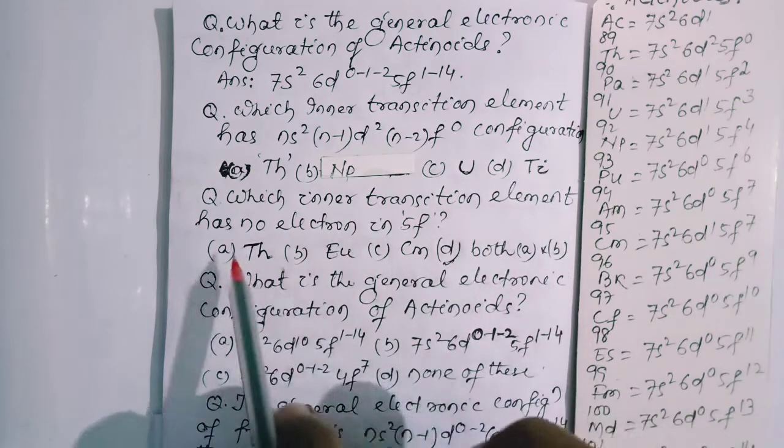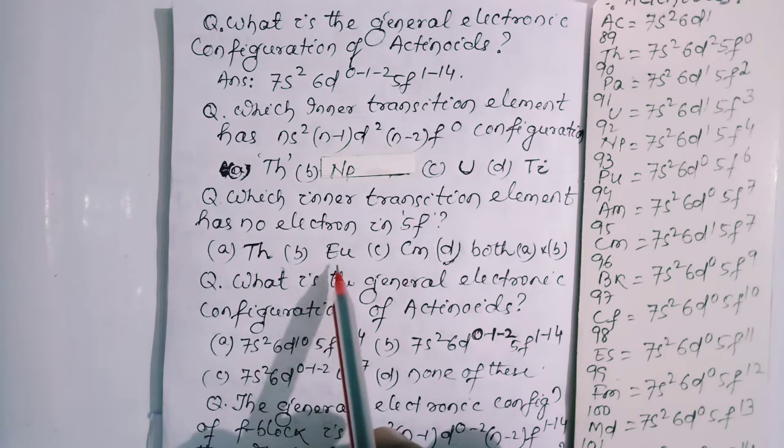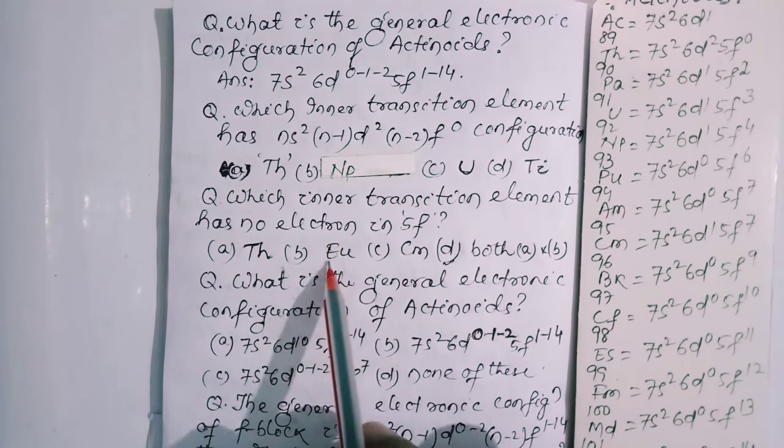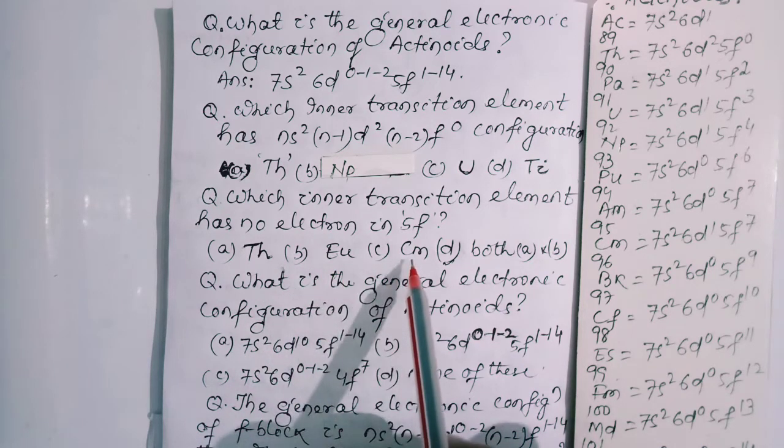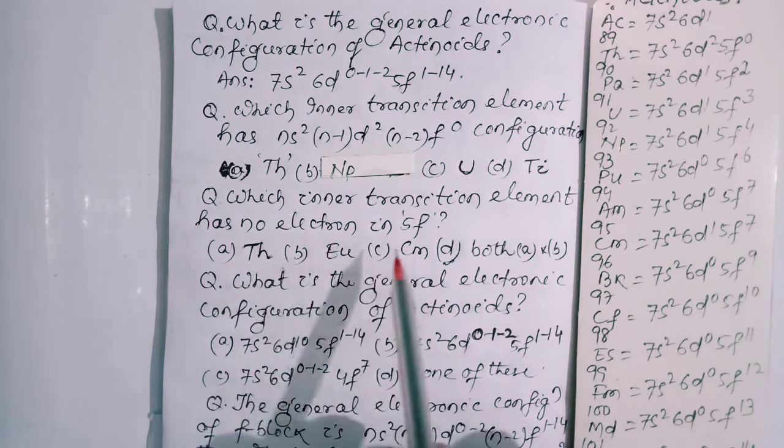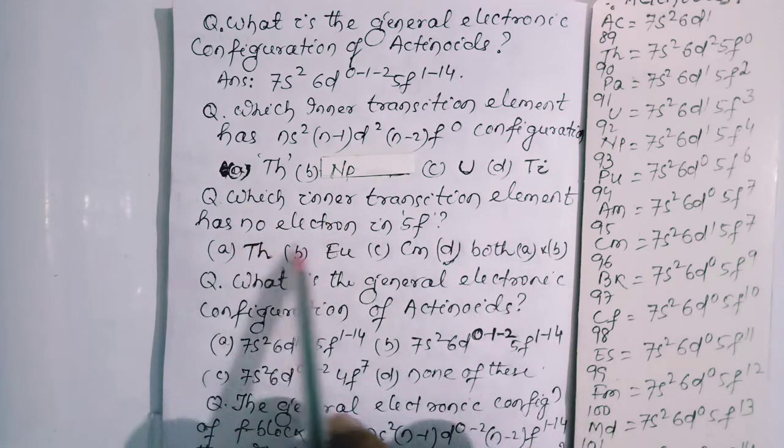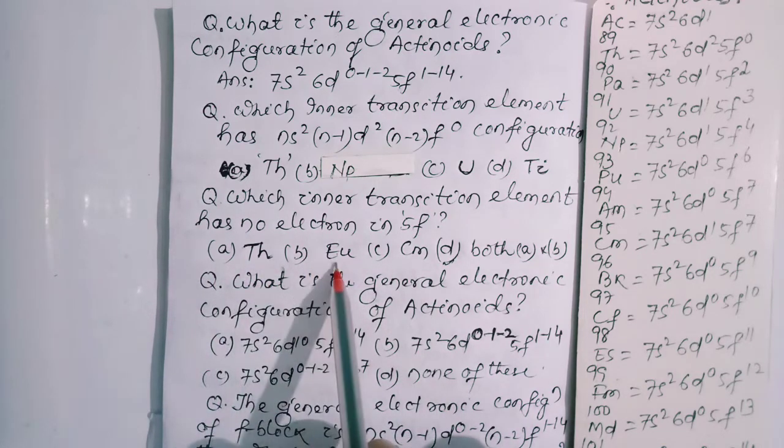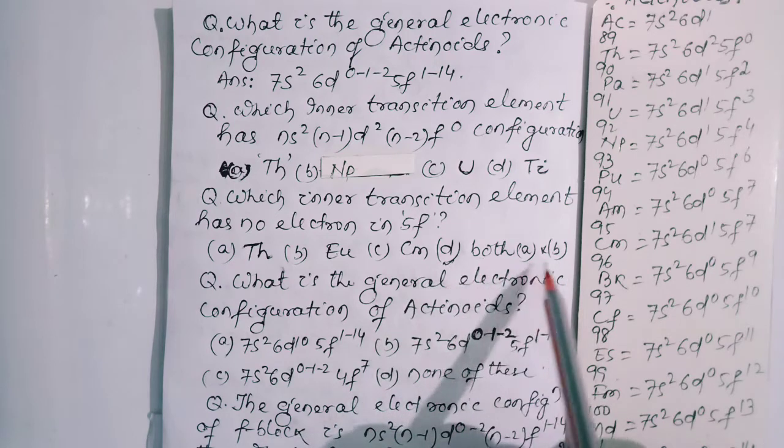Which inner transition element has no electron in 5f? Obviously, Thorium is correct. Option B is also correct because Europium is a lanthanoid. Its last electron enters in 4f, not in 5f. So it is also correct. Curium is an actinoid and its last electron enters in 5f. So it is not correct because here the question is which inner transition element has no electron in 5f? So option A is correct, option B is correct. So the most appropriate answer is D because it contains both A and B.